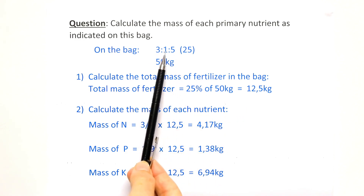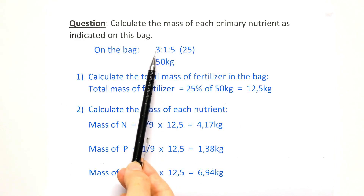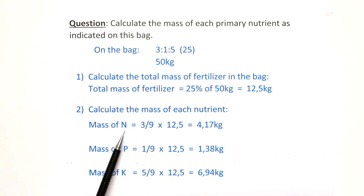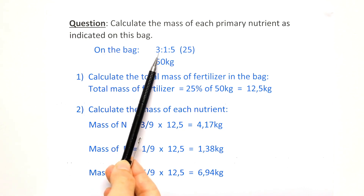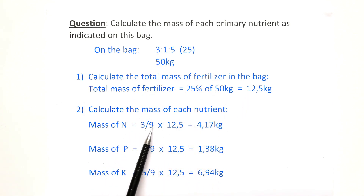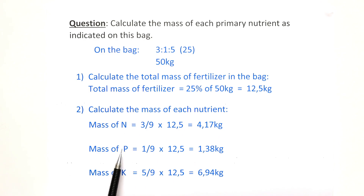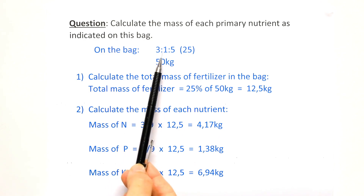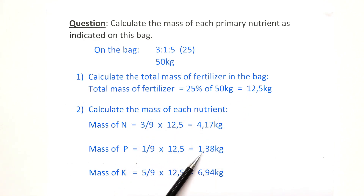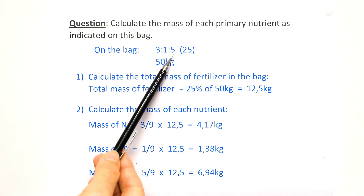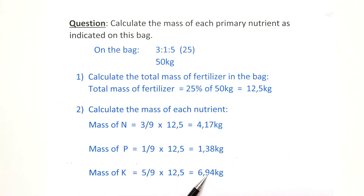Now we know the ratio NPK — always keep the order. First, calculate the mass of nitrogen: 3/9 parts of your total mass, so 3/9 × 12.5 = 4.17 kg of nitrogen. For the mass of phosphorus: 1/9 × 12.5 = 1.38 kg of phosphorus. And the mass of potassium: 5/9 × 12.5 = 6.94 kg of potassium. If we add these up, we should get 12.5 or close to it, because we have been doing some rounding off with our final masses.